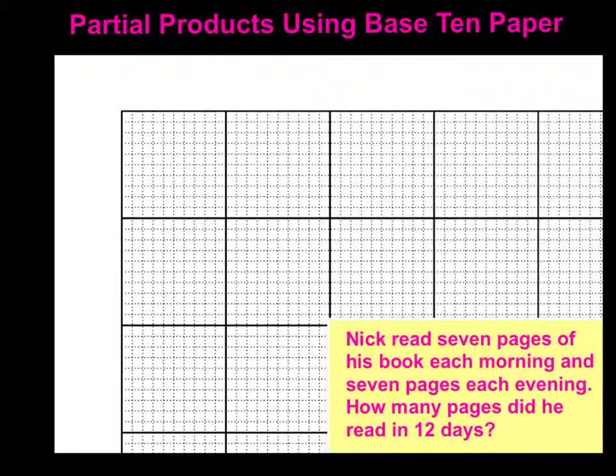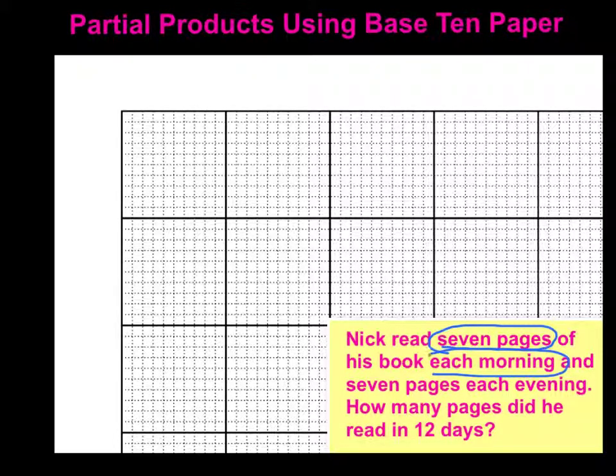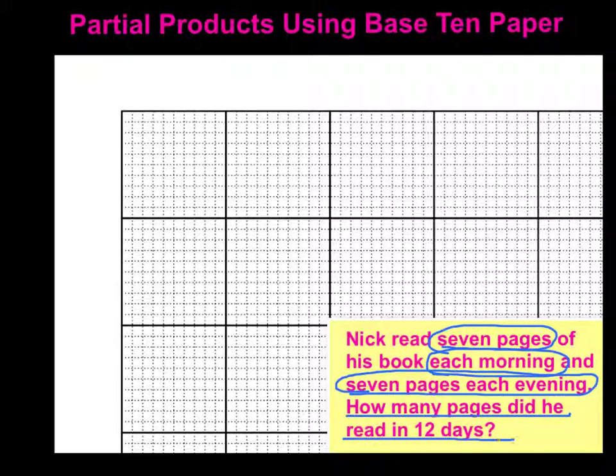All right, so we're going to take a look at that. Apparently every morning, maybe before school, he read seven pages. And he also read seven pages each evening. My question was to know how many pages did he read in 12 days? So if he reads seven pages every morning and seven pages every evening, we know that he reads 14 pages a day.